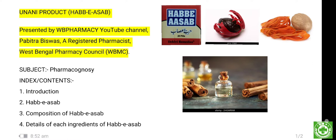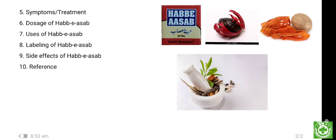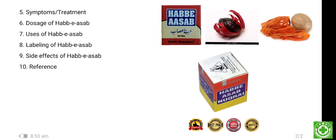In this video you will get: the introduction — what is Habb-e-Asab and its definition; number three, composition of Habb-e-Asab — how many ingredients are included and their quantities; number four, details of each ingredient; number five, symptoms and treatment; number six, dosage; number seven, uses; number eight, labeling; number nine, side effects; and number ten, references. That is the total information in this video. The source of this information is included in the references. So keep watching from first to last — this video will help you in your knowledge and in your project or presentation. Thank you.